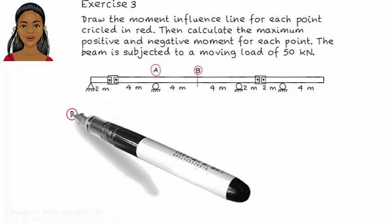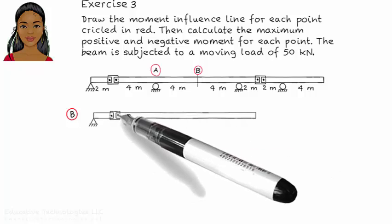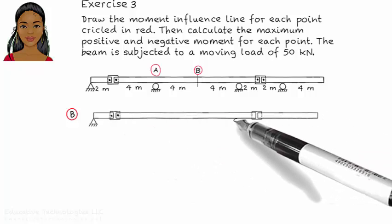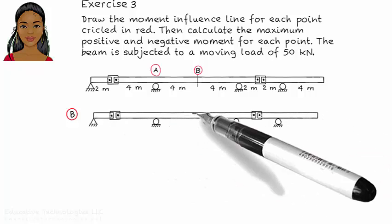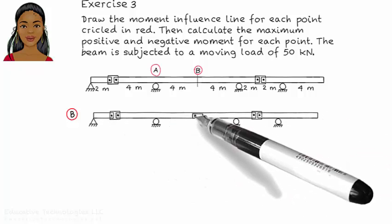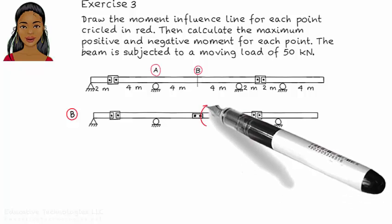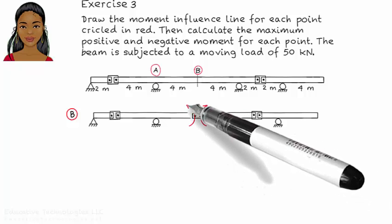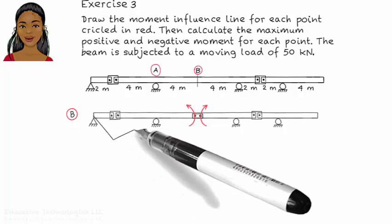Drawing the influence line for moment at B. Place a hinge at B and apply a positive moment to the hinge. This causes the beam to deform like this.